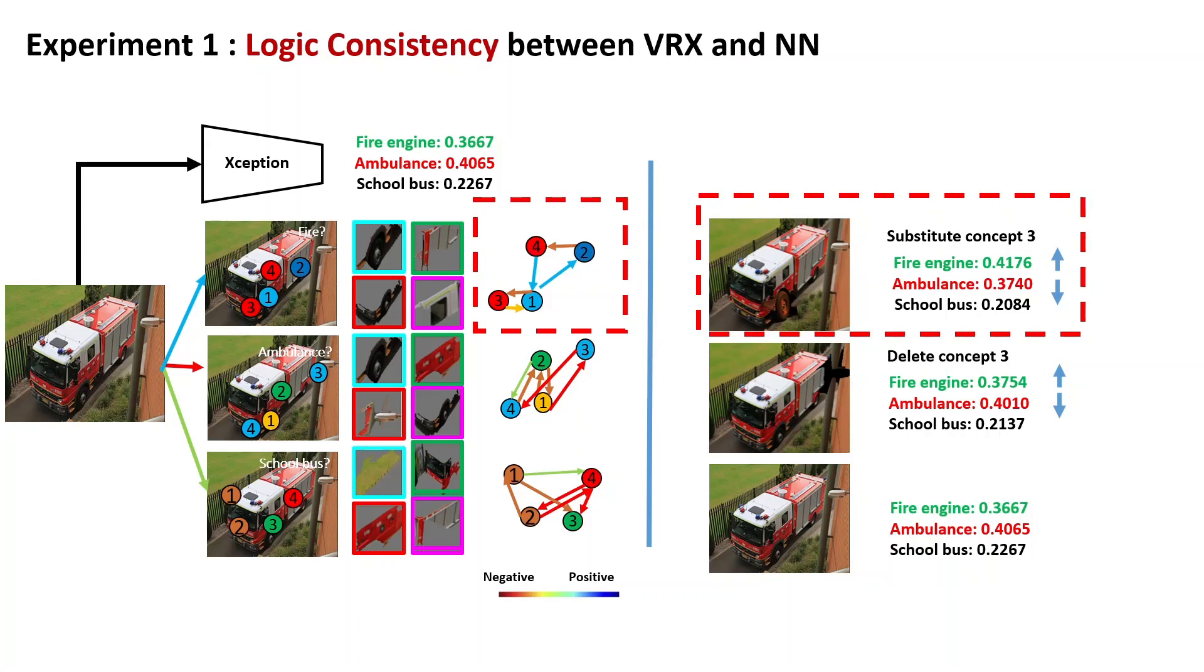However, if we substitute concept 3 with random patches or substitute the good concept 1 and 2, the network cannot correct the error, which shows the logic consistency.